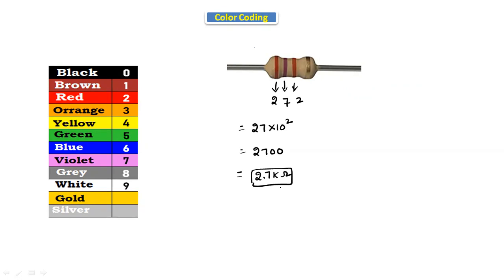Like this, we calculate each and every resistor value by using color coding. Try to remember all the colors — brown is 1, red is 2, orange is 3 — and tell the values directly. If there are two colors AB, three colors use AB × 10^C, and four colors use ABC × 10^D. This is the method we use to calculate resistor values.